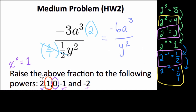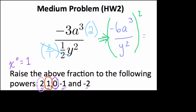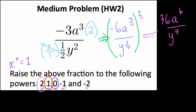What if we square it? There's a law of exponents where if we square this fraction, we square every piece of it. Negative six squared becomes 36. If we square a to the third, we multiply the exponents — that's a to the sixth. Over what? Well, y squared is being squared, so that's y to the fourth. So the result after squaring our fraction is 36 a to the sixth over y to the fourth.